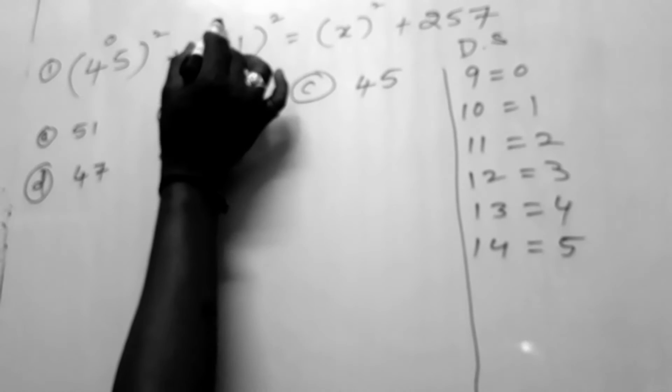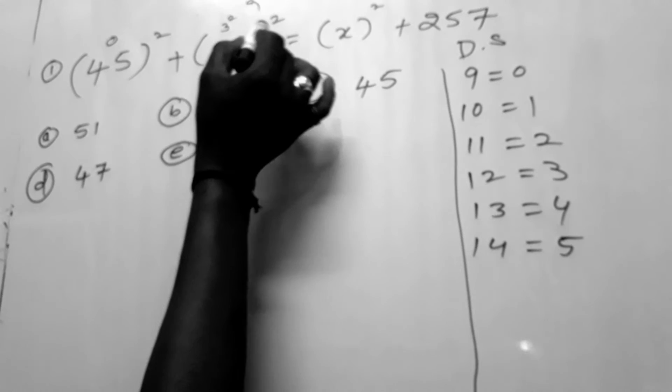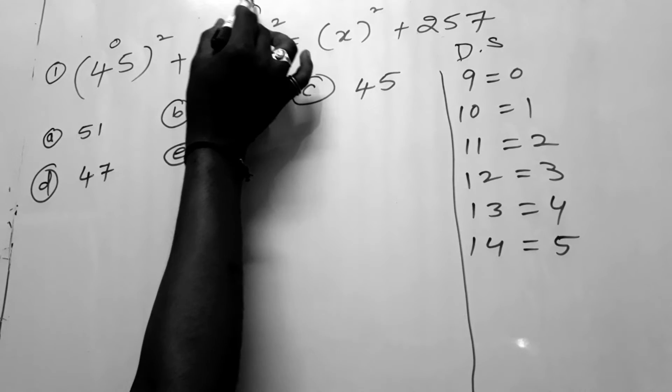2 plus 1 is 3. 3 square is nothing but 9. 9 digital sum is 0.